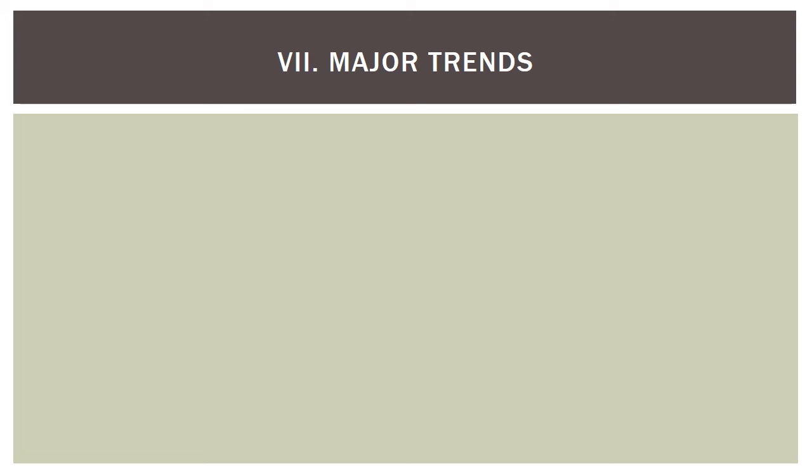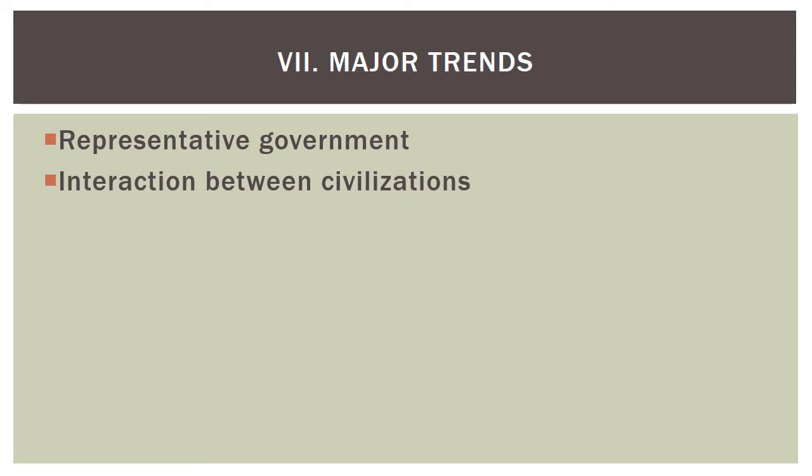Major trends across both Athens and Sparta and other Greek city-states: most had a representative government, meaning designated people made political decisions rather than every person in society. There was also significant interaction between civilizations — city-states fought each other or united against Persia, and they traded with surrounding areas. There were also commonalities in their culture. Finally, most Greek city-states had a large slave population. Hopefully these notes summarized the readings and helped clarify the content.